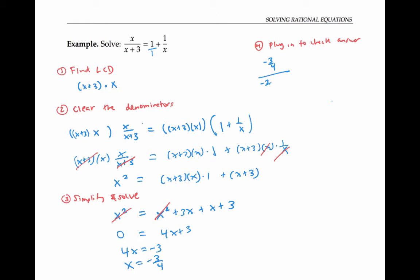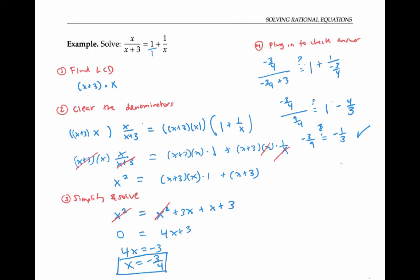So it should work out fine when I plug in. I get this expression; I can simplify the denominator — negative three fourths plus three: three is twelve fourths, so that becomes nine fourths. This simplifies to one; I'll flip and multiply to get minus four thirds. So here the complex fraction ends up being negative three ninths, and one minus four thirds is negative one third. So that all seems to check out.